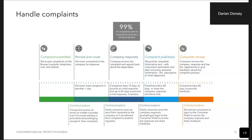However we get the complaints, we review and route them to the company for response. That's important when looking at data — you'll see the company we sent the complaint to and the category the company used when they provided their response. A response is due back to the consumer and the CFPB within 15 days of the company receiving the complaint, but companies can have up to 60 days to provide a final response if needed. The vast majority of complaints get responses within the first 15 days. 99% of the complaints we send to companies get timely responses.